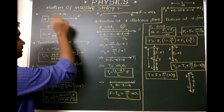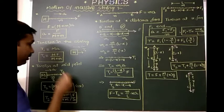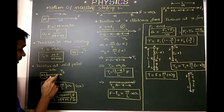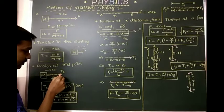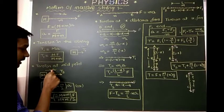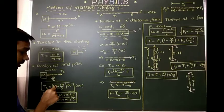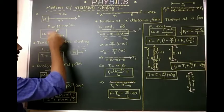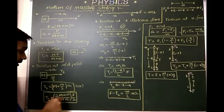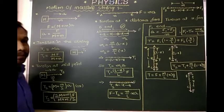Now, what is the tension at the midpoint? Here we take half of the string, so the mass of the half-string is m/2, and the block mass M remains. The tension T2 equals (M + m/2) times acceleration a. Taking the LCM and substituting, we get T2 equals (2M + m) divided by (M + m) times F/2, giving the tension at the midpoint.